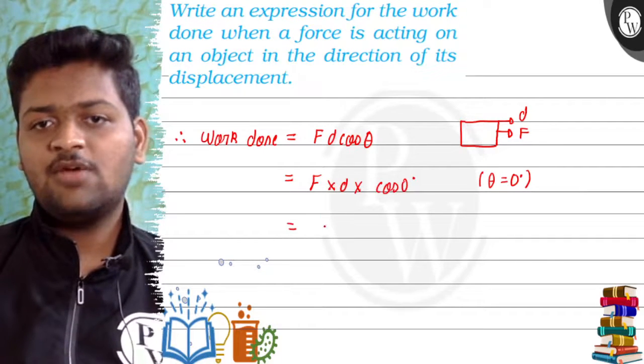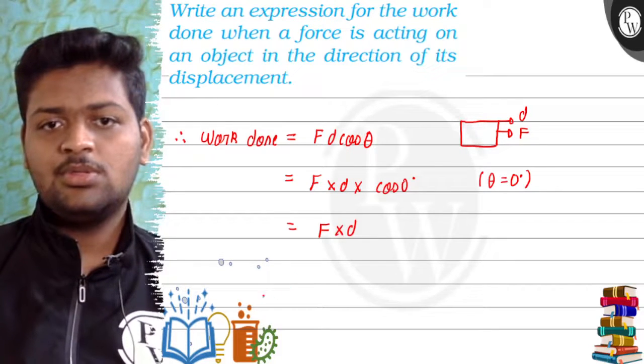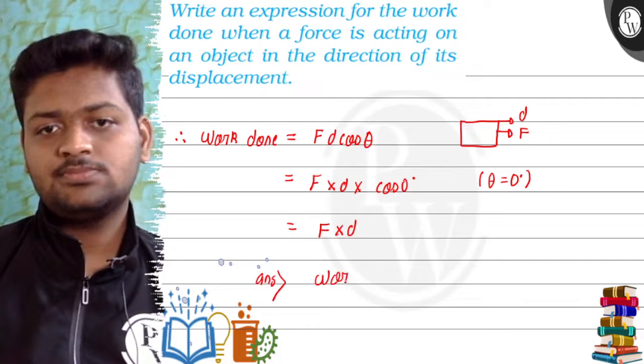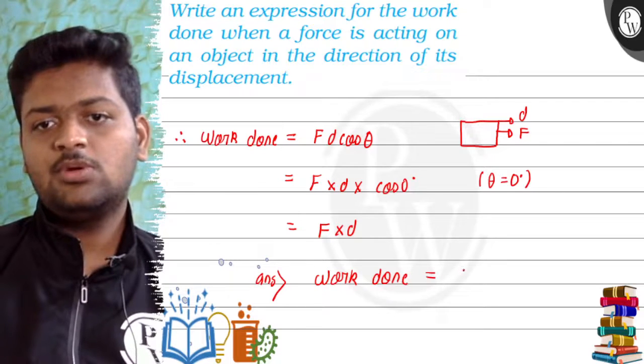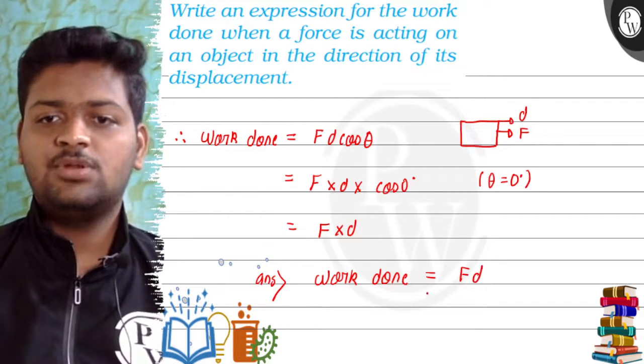cos 0 degree, we know that is 1, so this expression is F into d. So our final answer is work done is equal to F into d, that is force into displacement.